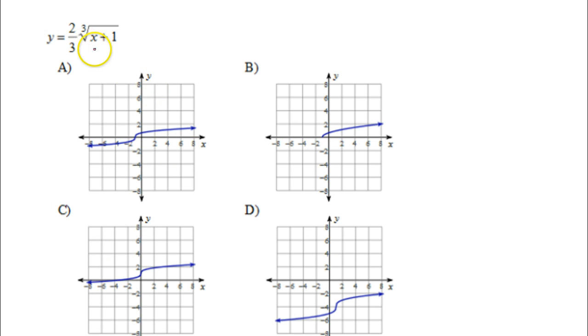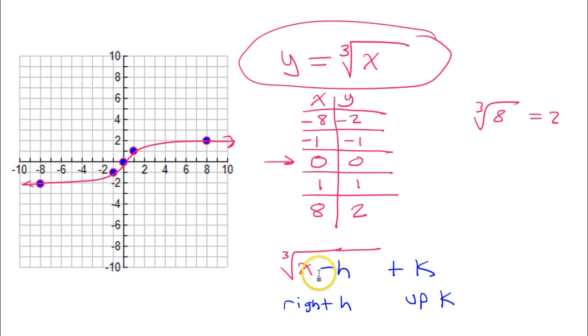So, when we look at this equation, the main thing that's going to help us pick which one of these is the right answer is the plus one underneath the radical. Now, remember, when you have a number added or subtracted under the radical, that's going to be a left or right transformation.